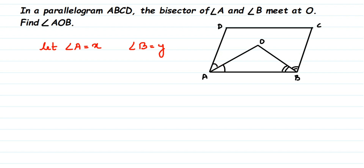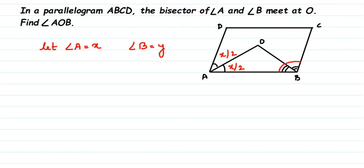My complete angle is X and this is a bisector, which means dividing into equal parts — this will be half of X and this will be half of X. If the whole angle is 80, then this will be 40 and this will be 40. So this angle will be X by 2. I'm not worried about angle DAO; I want this interior angle OAB. Similarly, the complete angle B is Y, so both angles become Y by 2.